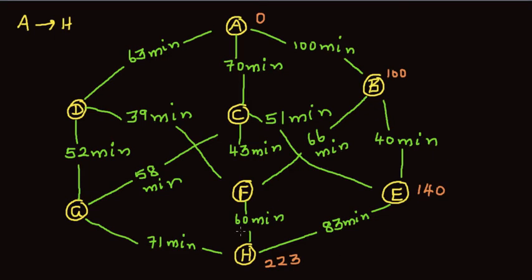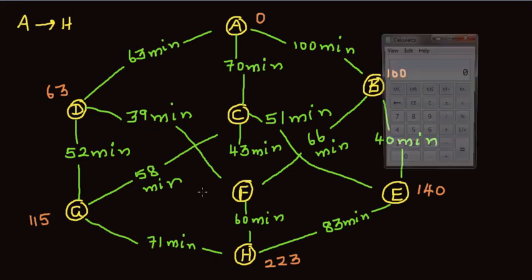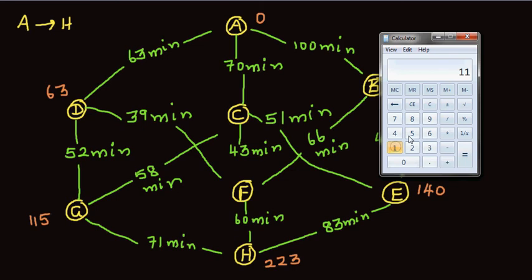In this method, we try to better this 223 by looking at different ways. If a way is not better, we won't go that way. Let's try A to D — that's 63 minutes — then 63 plus 52 is 115, and 115 plus 71 is 186. That is better!